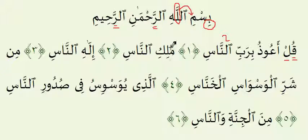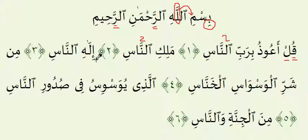Second Ayah. The Ma, La, and Ka all take single Harakas so they should each be one count long. Again, we have Ghunnah for two counts because of the Noon with the Shaddah on top. Ayah number three: Ilaahinnnaas. Make sure you have the E sound for the Hamzah and for the Ha. The Lam is two counts long here, and remember the Ghunnah again.